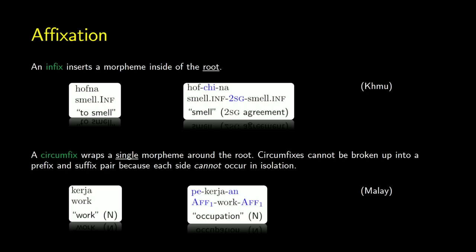Here's an example of an infix. We have a verb 'to smell' (hafna), and when we form the second singular agreement, we're splitting up the root — we get a disconnected root with something in the middle, and this is called an infix. In English this is very rare, but you can say 'abso-freaking-lutely', where 'absolutely' or 'absolute' is the root and you're inserting 'freaking' in the middle. A circumfix is a single affix that wraps around the root: if 'keria' means work, then 'pe-keria-an' has 'pe' and 'an' wrapping around it — neither can occur in isolation, but together they form the circumfix.